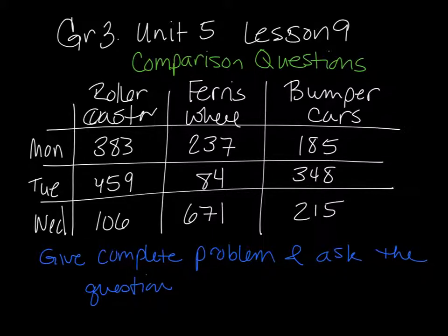Today, we're talking about comparison problems. So the idea is we're using words like more, fewer, less, things like that. So, for example, on Tuesday, there was 459 people that rode the roller coaster, and 106 people rode the roller coaster on Wednesday. How many more people rode the roller coaster on Tuesday than on Wednesday?